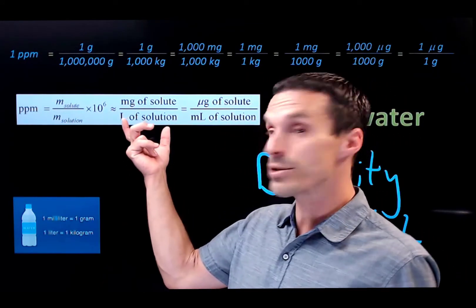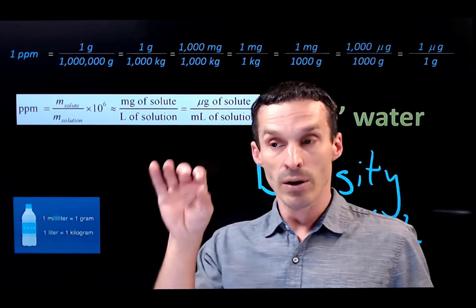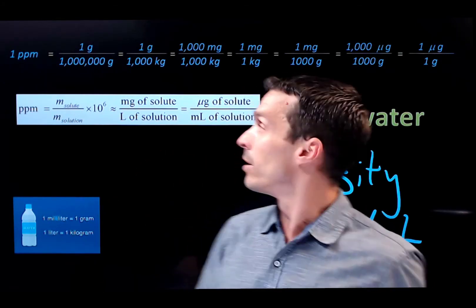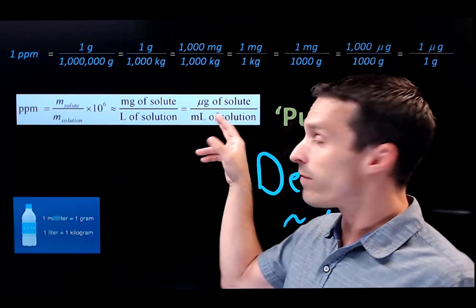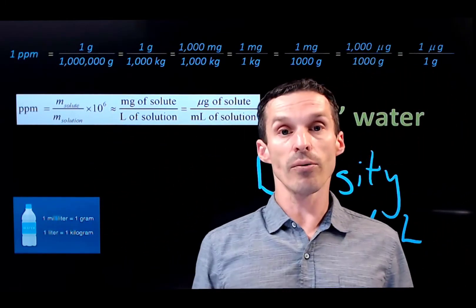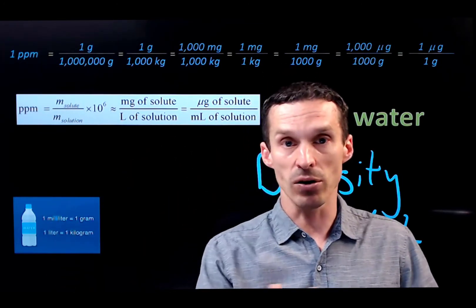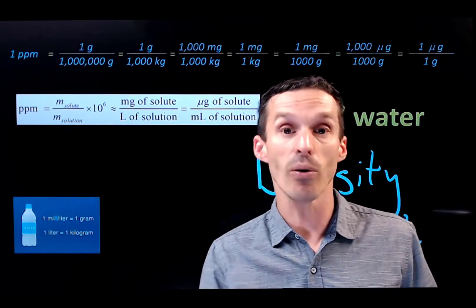But if we're dealing with a solution, and that solution is made of water, and that's really important, the density would be one. So rather than talk about masses and grams, we could talk about volumes and mLs. Microgram per mL is just another way of saying micrograms per gram of solution, as long as density is one. I keep stressing that it is important.